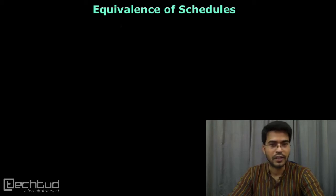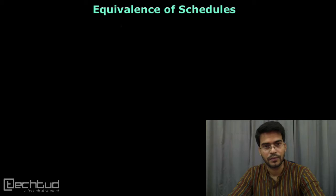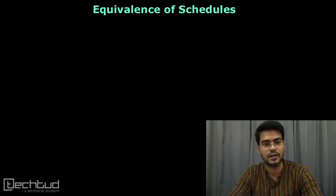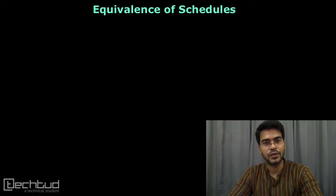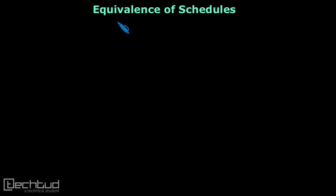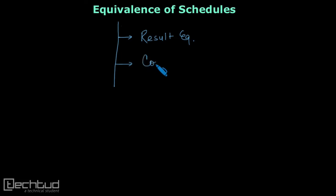When we talk about two schedules, they can be equivalent to each other sometimes. One way is that we have exactly identical schedules — if they are identical, then of course they are equivalent. We have three categorizations for when we call schedules equivalent: the first one is result equivalent, the second one is conflict equivalent, and the third one is view equivalent.